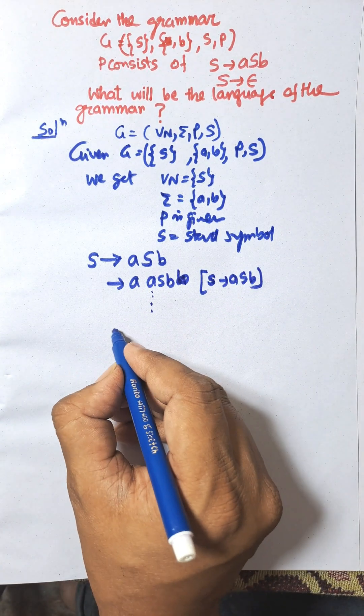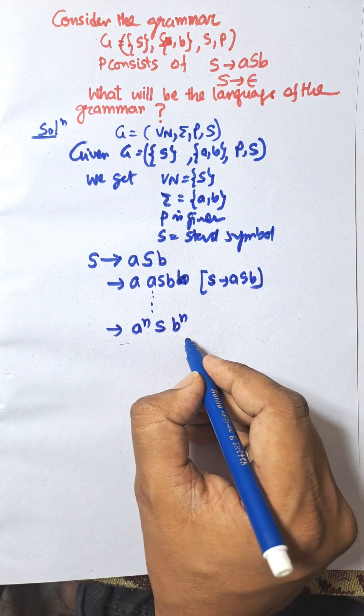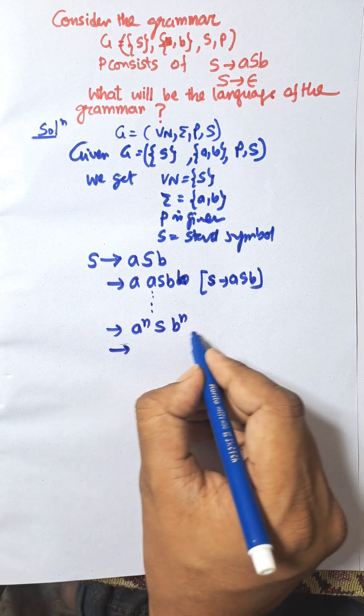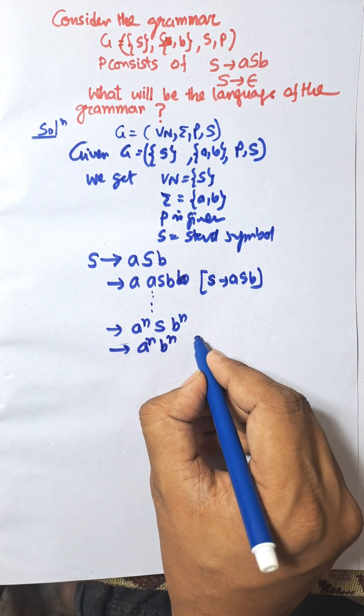We get a^n S b^n. Finally, when we put S to epsilon, that becomes a^n b^n.